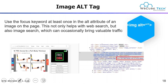Next we have image alt text. When you use any particular image on your webpage, you must add an alt tag — alt stands for alternative text. If your image is not visible on Google, your alt text is shown instead. You should use the focus keyword at least once in the alt attribute of one image on a page. This not only helps with web search but also image search, which can occasionally bring valuable traffic.